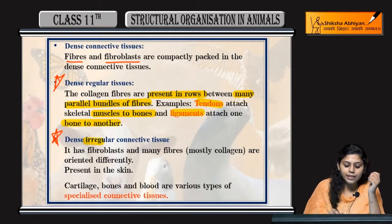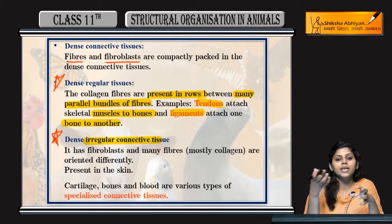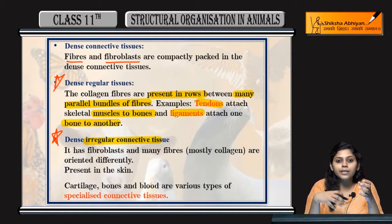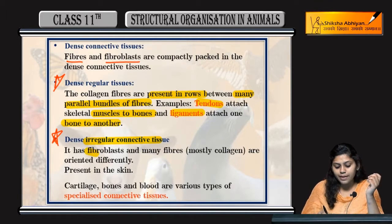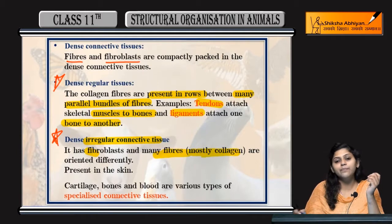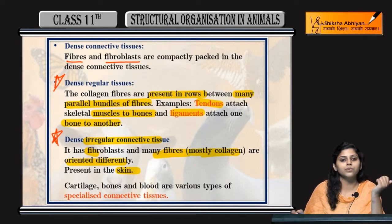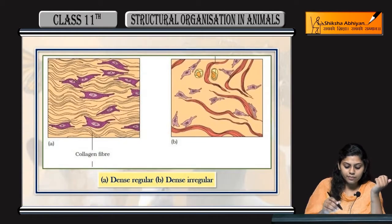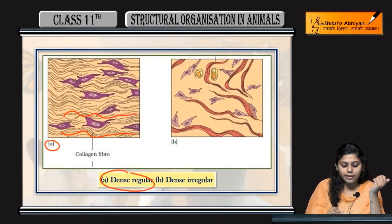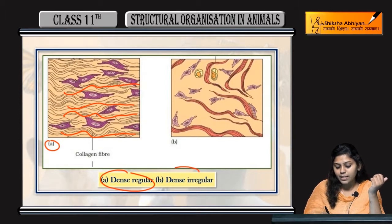Coming to dense irregular connective tissues - irregularly arranged hoongi, means kohin peh bhi orientation hoogi cells ki. Fibroblast and many fibers, mostly collagen fibers hoongi, in ki orientation different hoogi. Yeh skin mein present hootay hain. You can see dense regular tissues joh hai woh regularly arranged hain, regular pattern, whereas irregular tissues koye bhi orientation, kohin peh bhi hai.